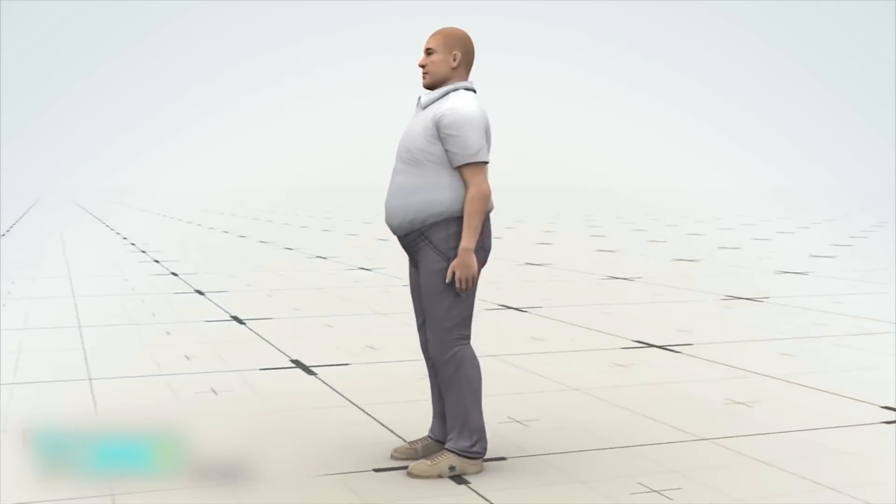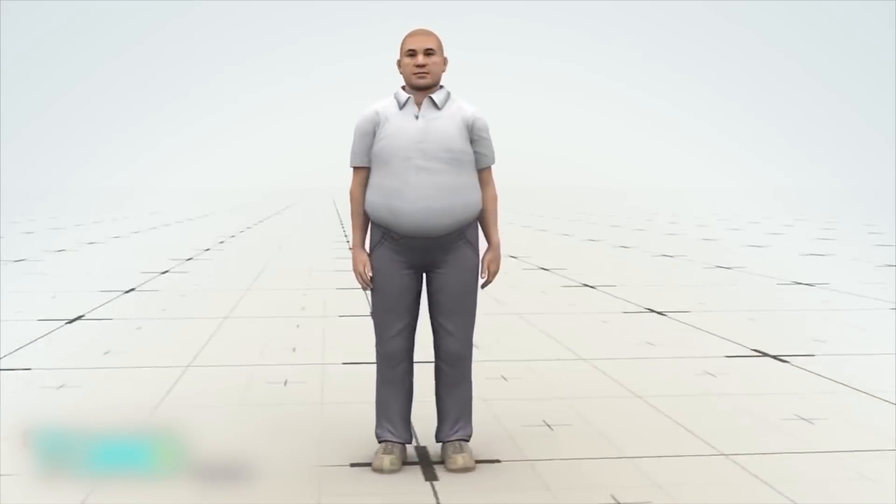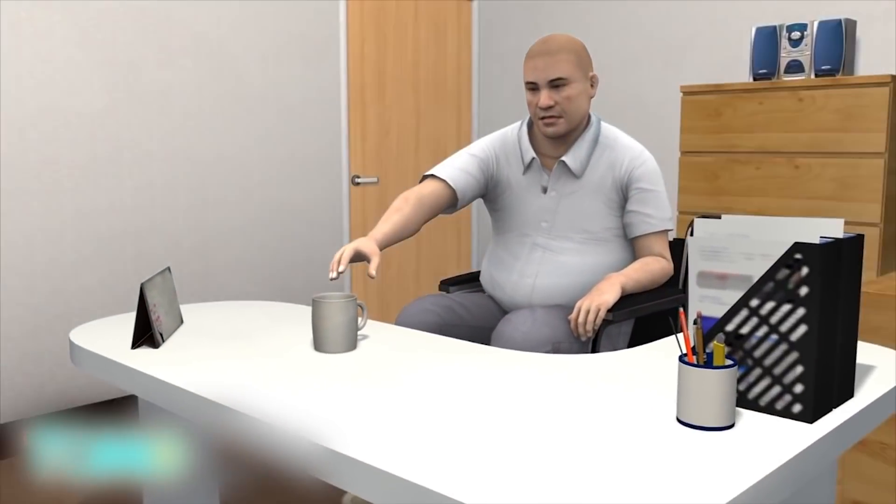When Ian Burkhart broke his neck four years ago, it damaged his spinal cord and left him paralyzed from the chest down. He retained some movement in his shoulders and biceps, but lost sensation in his hands and legs.